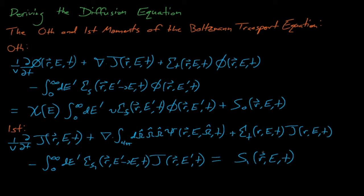In the previous lecture, we took the first and the zeroth moments of the Boltzmann transport equation, which left us with these two simultaneous equations with three unknown variables: the neutron flux, the neutron current, and this leakage second moment of the neutron flux term. These two simultaneous equations are sometimes known as the P1 equations.